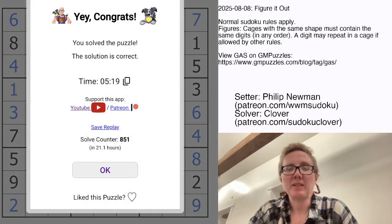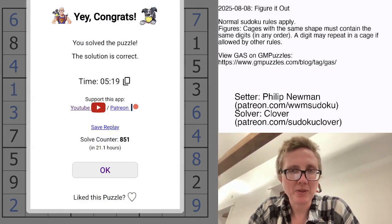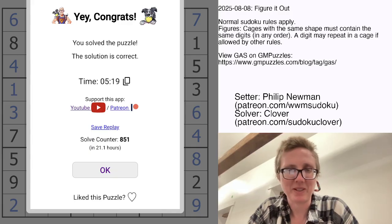And now we are done. And that is how you solve Philip Newman's Figure It Out. Feel free to guess tomorrow's variant in the comments if you think you've picked up on what's going on with our August guessing game. And I will see you again in a few days.